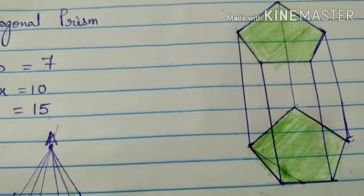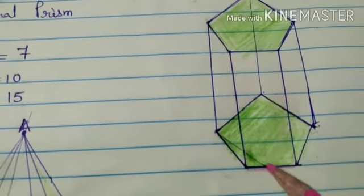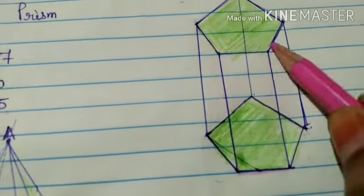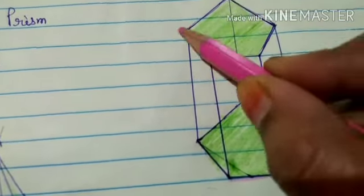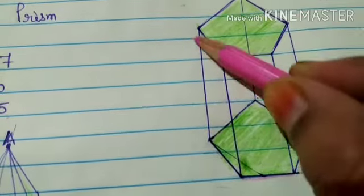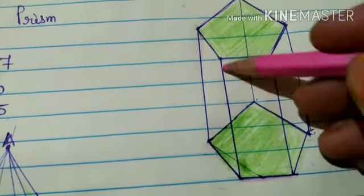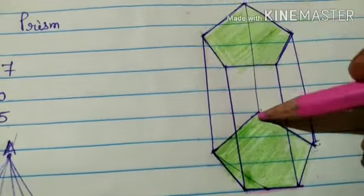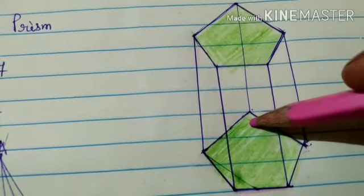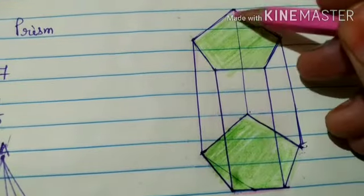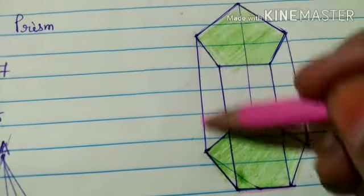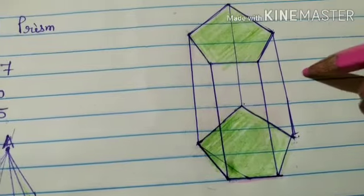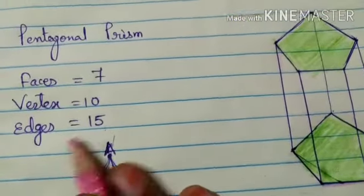Now how many edges are there? So let's count: 1, 2, 3, 4, 5. Similarly 6, 7, 8, 9, 10. Then you can see from here 11, it is 12, 13, 14 and here 15. So the total edges in a pentagonal prism is 15.